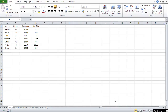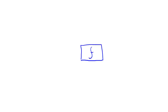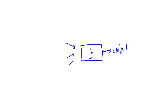Hi guys, in this video we're going to deal with our first function in Excel. First of all, what is a function? Well, we can imagine a function as a sort of a black box — it has a specific output and certain inputs. These inputs are called arguments.